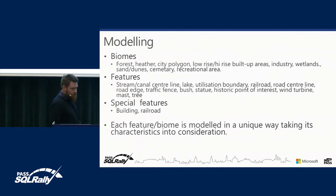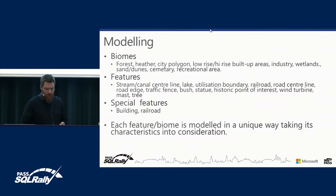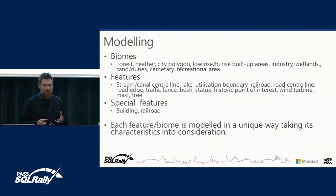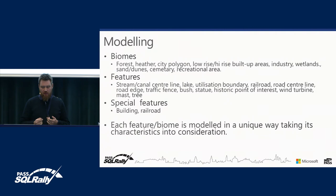As for the modeling, we had biomes — forest, heather, and so on — and we had similar features in our map data which we could translate into a Minecraft biome. We also had more regular features like a traffic fence or a wind turbine that had to be modeled in a certain manner. And then special features requiring more intelligence: buildings with four walls, a roof, and windows; a railroad that needs to be a network so you can actually put a cart on it and travel along it. Each feature had its own characteristics and had to be modeled in its own way.